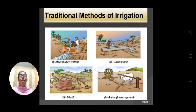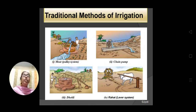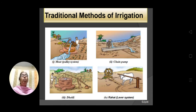Nowadays you may not see this method because technology is so advanced and farmers want to save time and water. In the moat or pulley system, with the help of a pulley, water is drawn from the well and supplied to the field. The other method is the chain pump — with the help of a chain pump, water is drawn from a well or a nearby river or canal, and underground water is drawn out and supplied to the field.